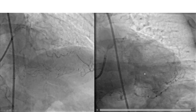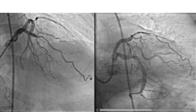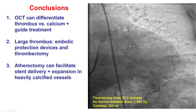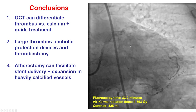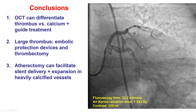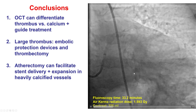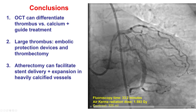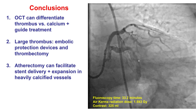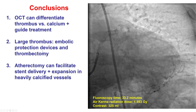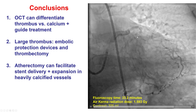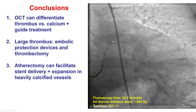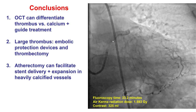End of the case — we do have a nice result in the circumflex with no distal embolization, and we also have a nice result in the proximal LAD. Several potential lessons from this case: the first is how OCT can help differentiate between calcium and thrombus. This is a case where the vessel did have significant calcium, but it was actually a thrombotic lesion causing the filling defect, and using the filter as well as thrombectomy helped prevent potential distal embolization and periprocedural myocardial infarction. The other lesson is that for heavily calcified lesions, upfront atherectomy can help with delivering stents, but also, and sometimes even more importantly, with good stent expansion and stent strut apposition.